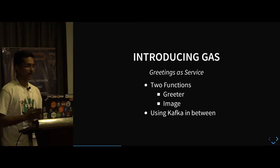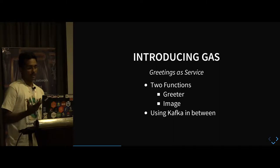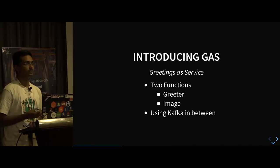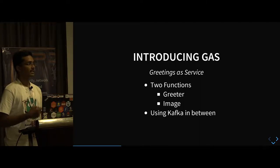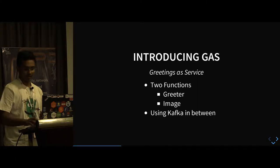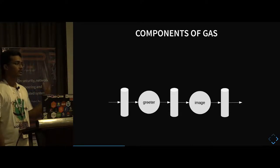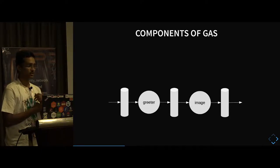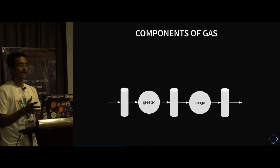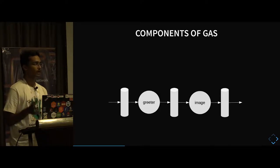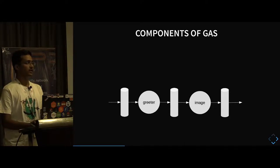This demo has two functions — a greeter function and an image function — and both communicate using Kafka queues. A message queue is there; the user puts their input in one queue, it gets processed by one function, which puts the output in another queue. You have an input queue going to the greeter function, it processes the data and puts it into the next queue, and the image function picks it up with the output taken from the output queue. This is a small part of a larger application running on a Kubernetes cluster.